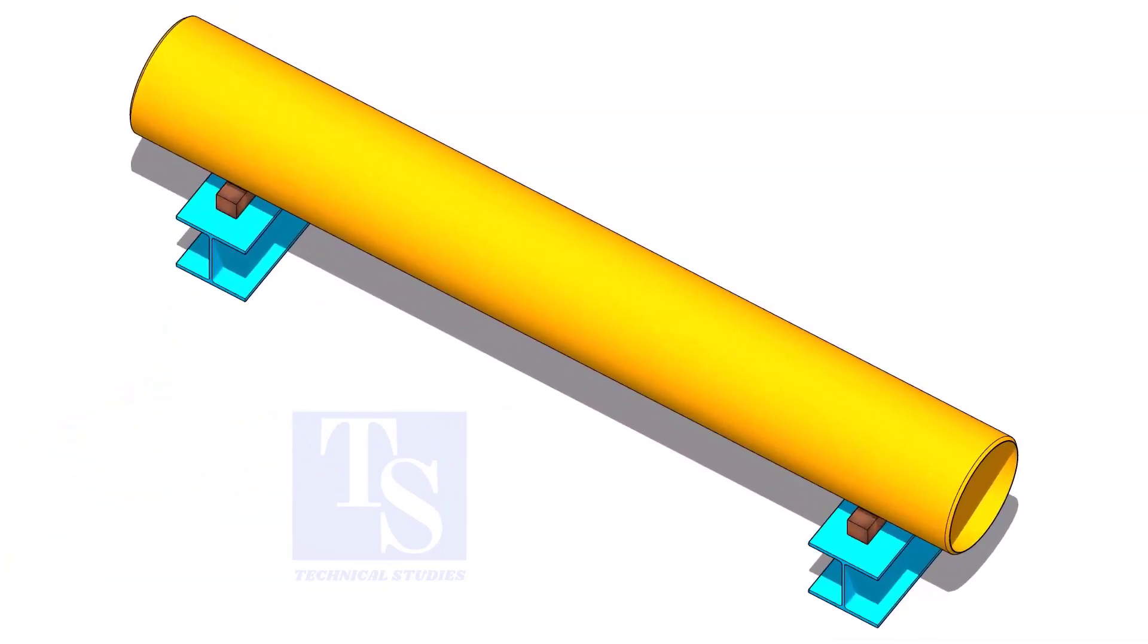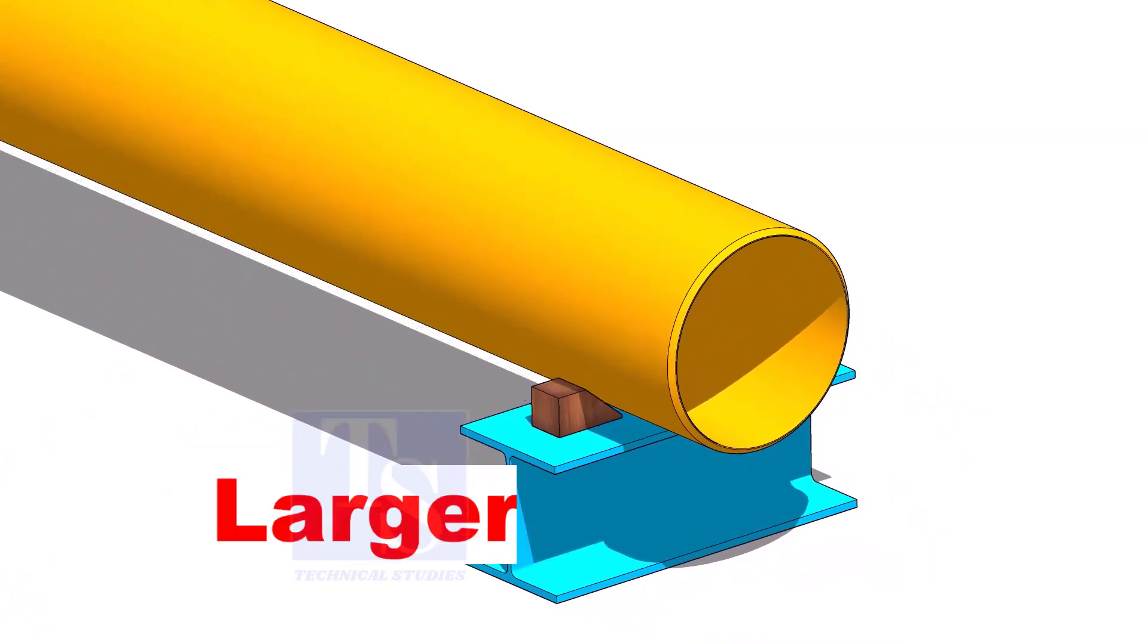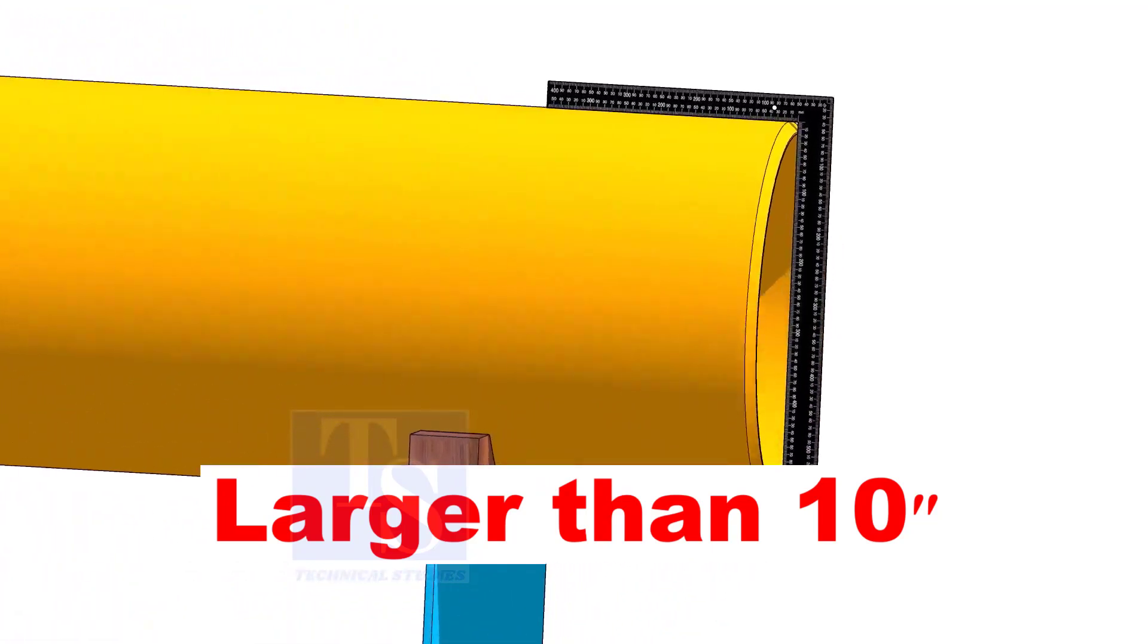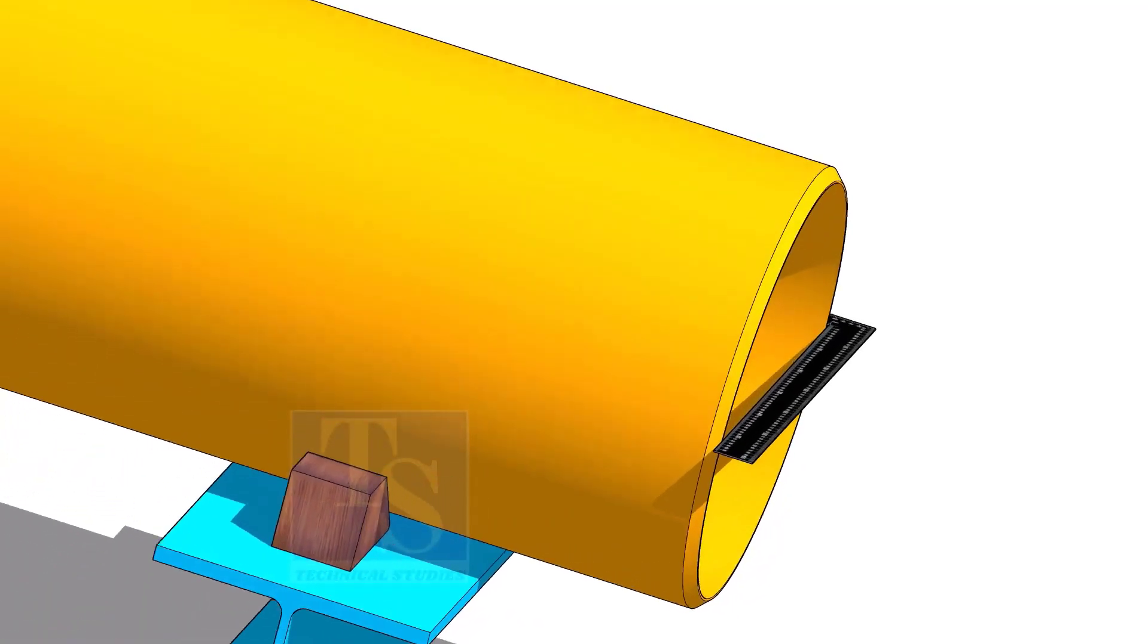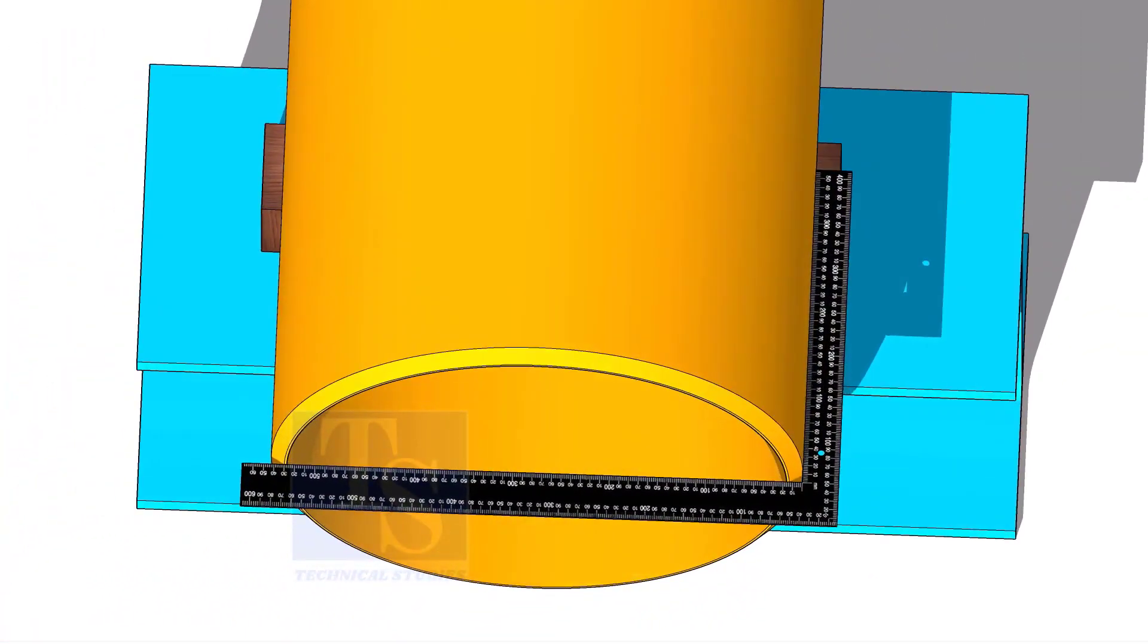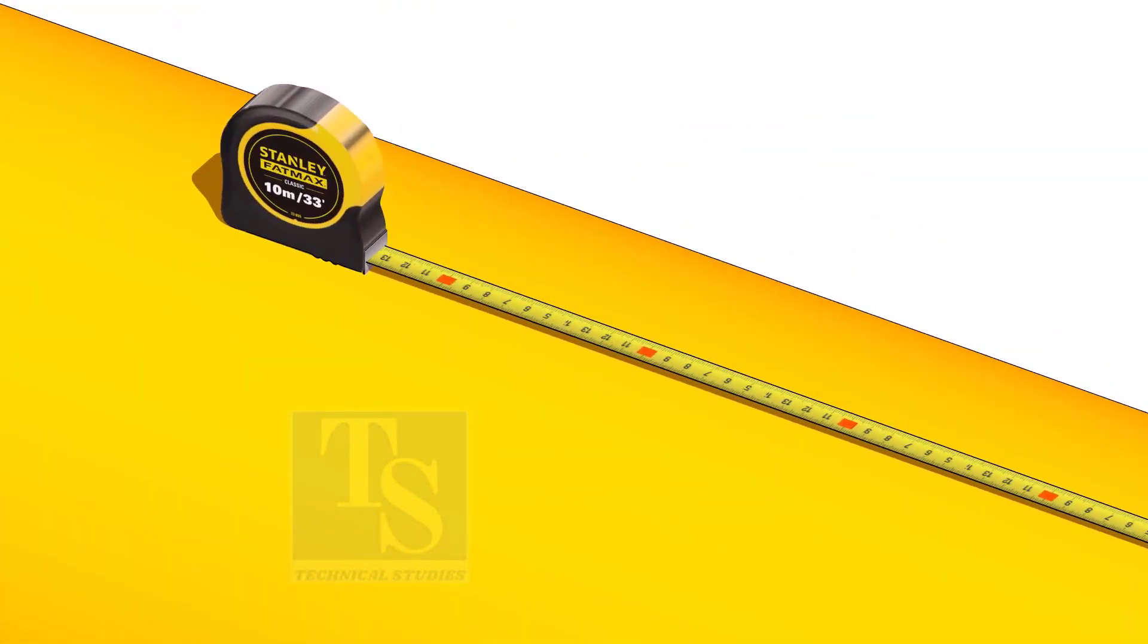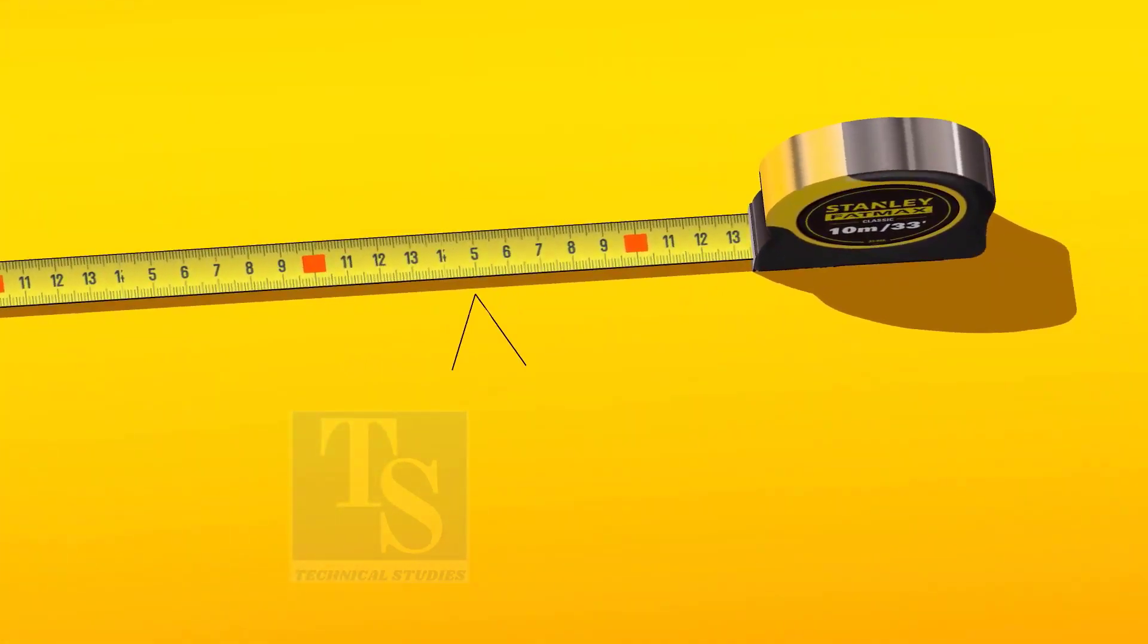For pipes larger than 10 inches, check the squareness of the pipe end. Mark the length on multiple locations, as shown.